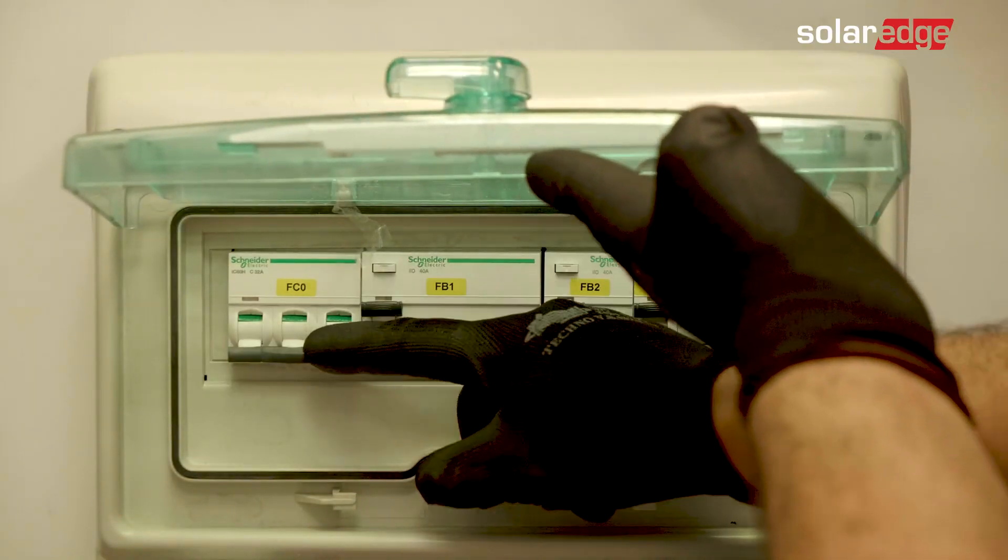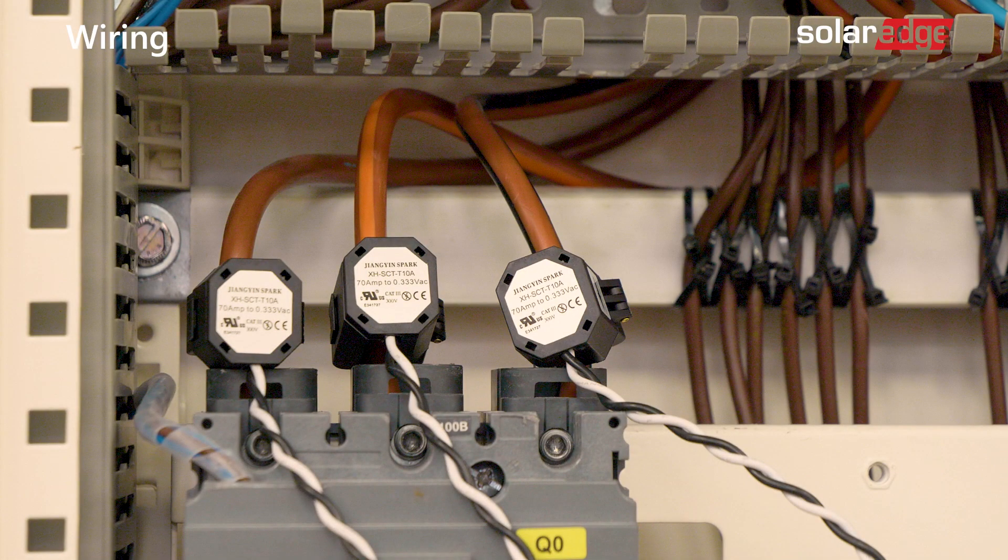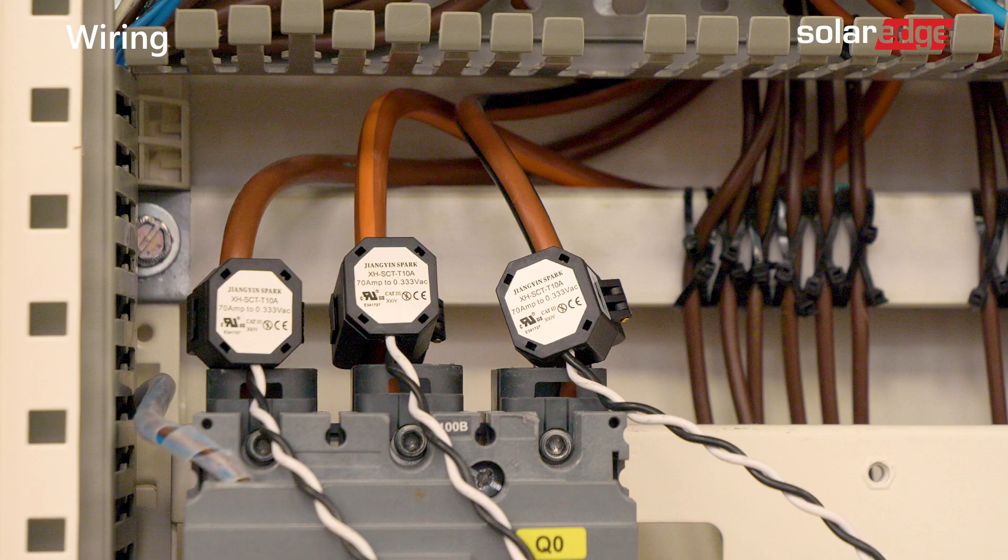Turn off AC power before clamping on current transformers. Now, clamp the current transformers with the arrows pointing to the grid for consumption or export and import measurement.